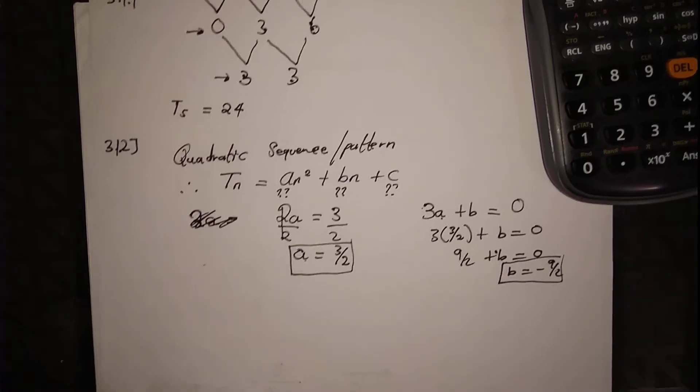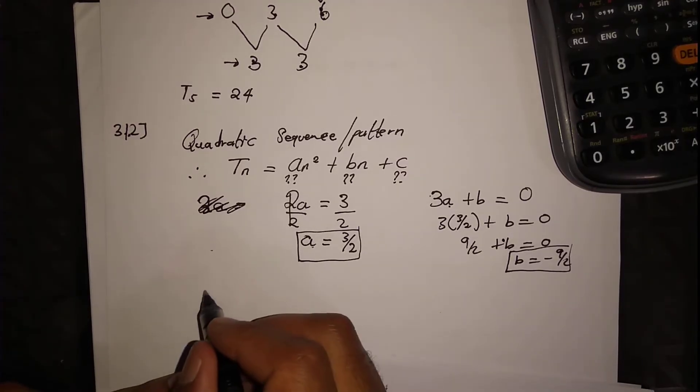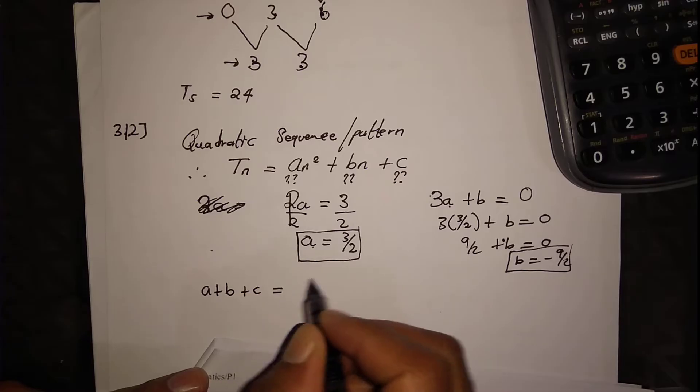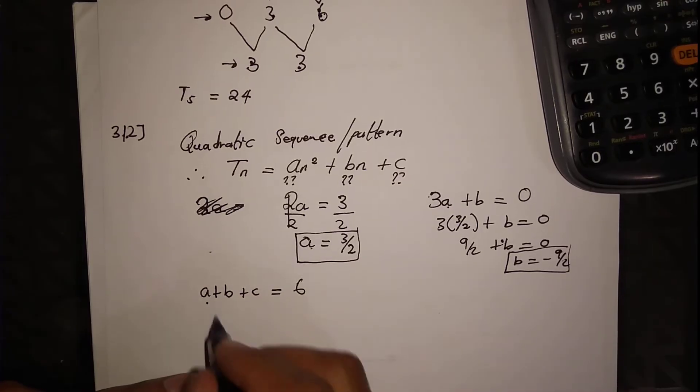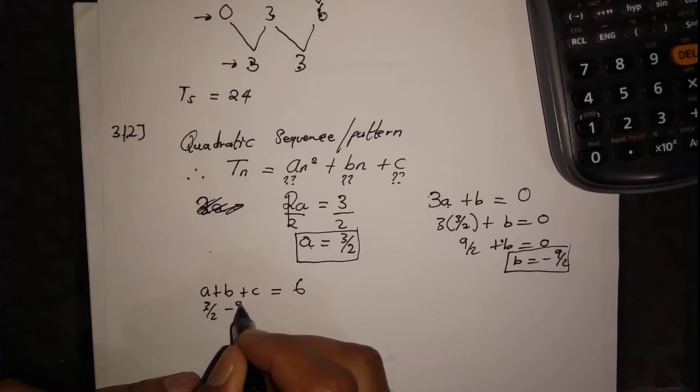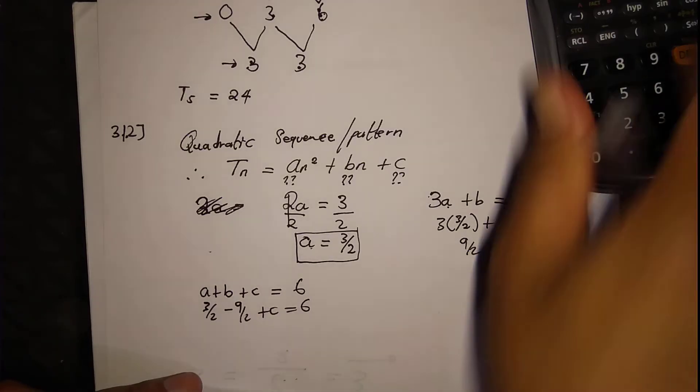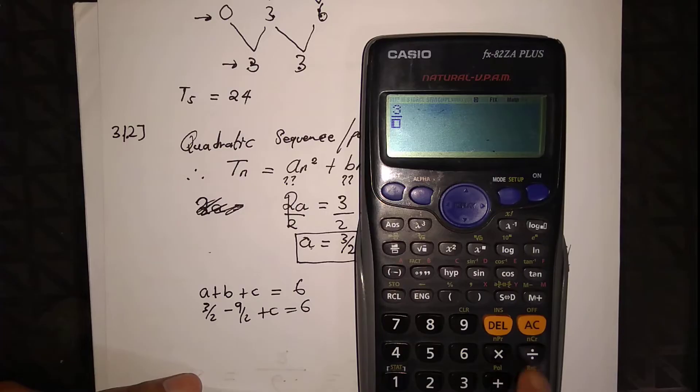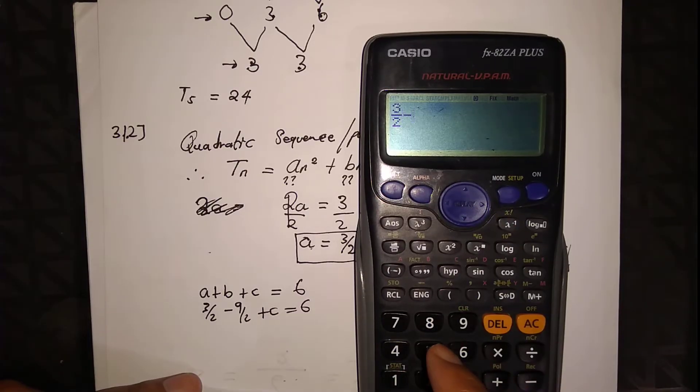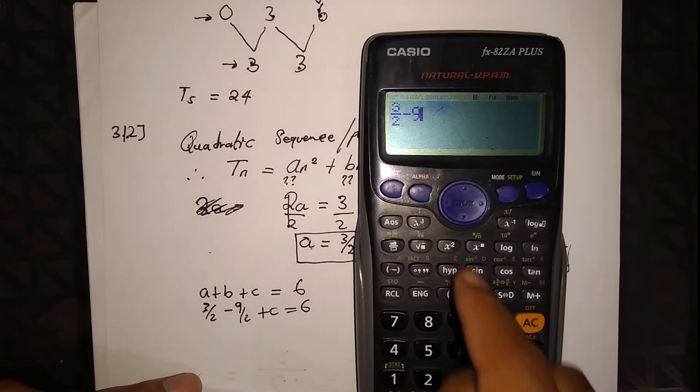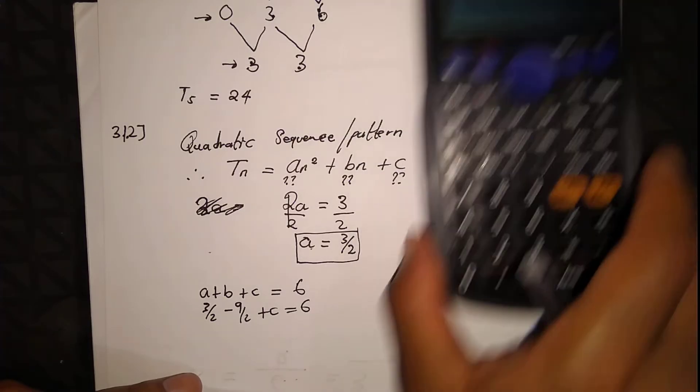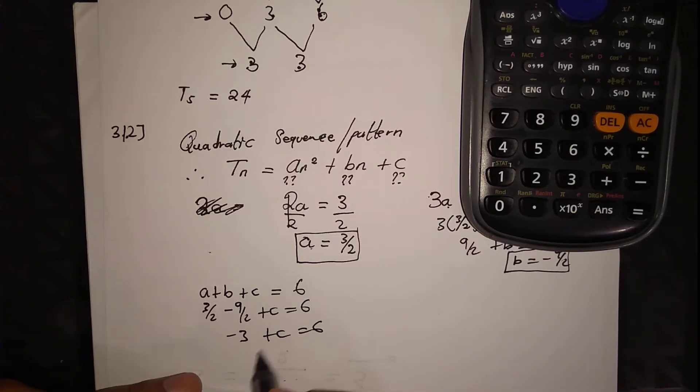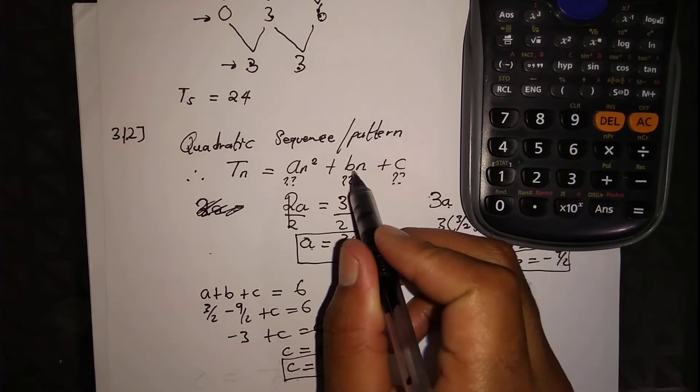Therefore B equals negative 9 over 2. For C: A is 3 over 2, B is minus 9 over 2, plus C equals 6. That's negative 3 plus C equals 6. So C equals 6 plus 3, which means C equals 9.